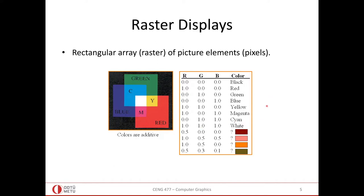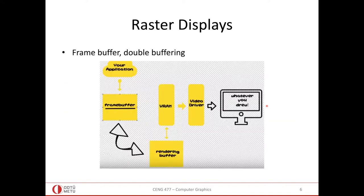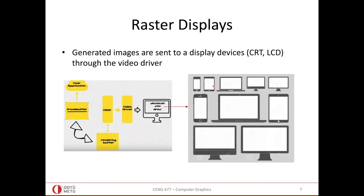When we have information to display on a raster display device, our application on the CPU talks with the frame buffer. The frame buffer is filled with data of screen size, and this buffer goes through your video driver to the panel of your video screen — which can be a big monitor or a cell phone. The generated images are sent to the display device through this driver.